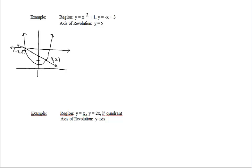We're still going to draw in our representative rectangle. We place ourselves on the axis of revolution, lining up with the rectangle. Now we're going to have to look down to locate the rectangle. When we look down, the closest distance to the rectangle is going to be at the top of the rectangle — we'll call this our inner radius. When we revolve around y equals 5, this is going to sweep out the hole, the gap in our solid.